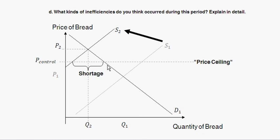There's also a geographic inefficiency. The price control is fixed over a certain area — whatever the city controls. Outside that area, a different regime presumably exists. So the demanders in the city who can't get bread there will travel outside the city to find it, spending extra money and time to do so. That introduces another inefficiency.